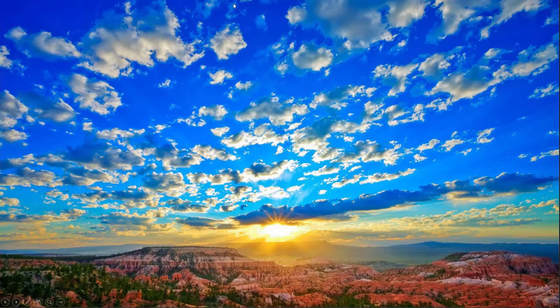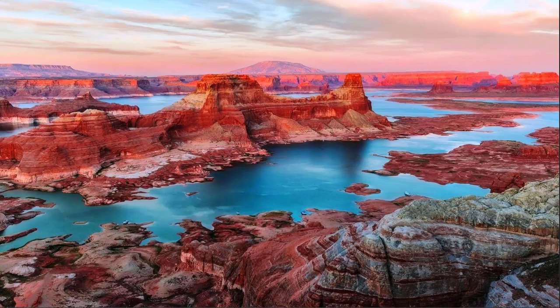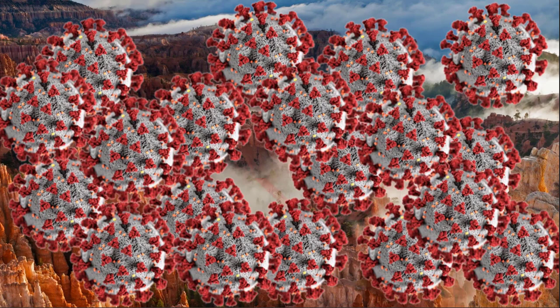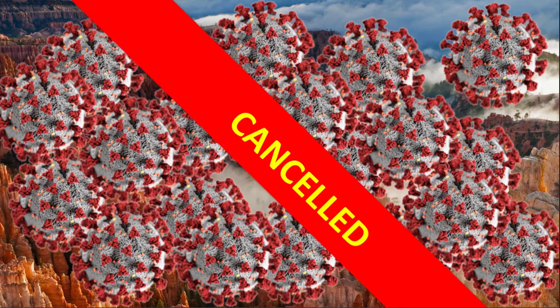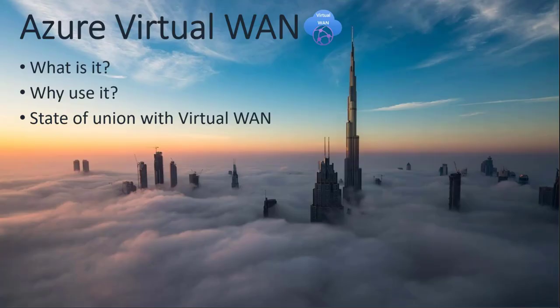When you talk about cloud as an MVP, we're going to talk about the Azure cloud — this is the Azure cloud above Bryce Canyon. Normally I should be on a plane across the ocean, renting a car and visiting all these nice places. But unfortunately a little virus came along and it all got canceled. So I'm stuck here in the summer, and I started doing some new stuff in Azure networking. Virtual WAN is what I was diving into — let's talk about it. What is it? Why would you use it? And where are we at with this technology?